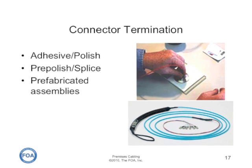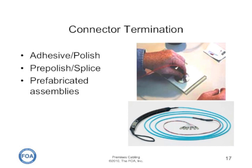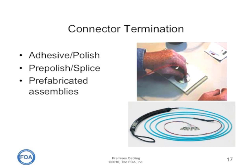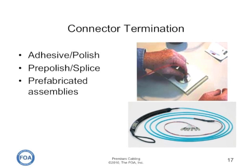Fiber optic cables can be terminated in the field using adhesive polish techniques, or pre-polished splice connectors that are just attached with a splice to the fiber. You can also use pre-fabricated cable assemblies. Some of these assemblies use single fiber connectors sealed in a plastic boot for pulling the cable, and some use multi-fiber cables like the MTP with modules that break the cables out from the MTP connector to regular single fiber connectors. Pre-fabricated assemblies are simple and easy to install, but still require testing.